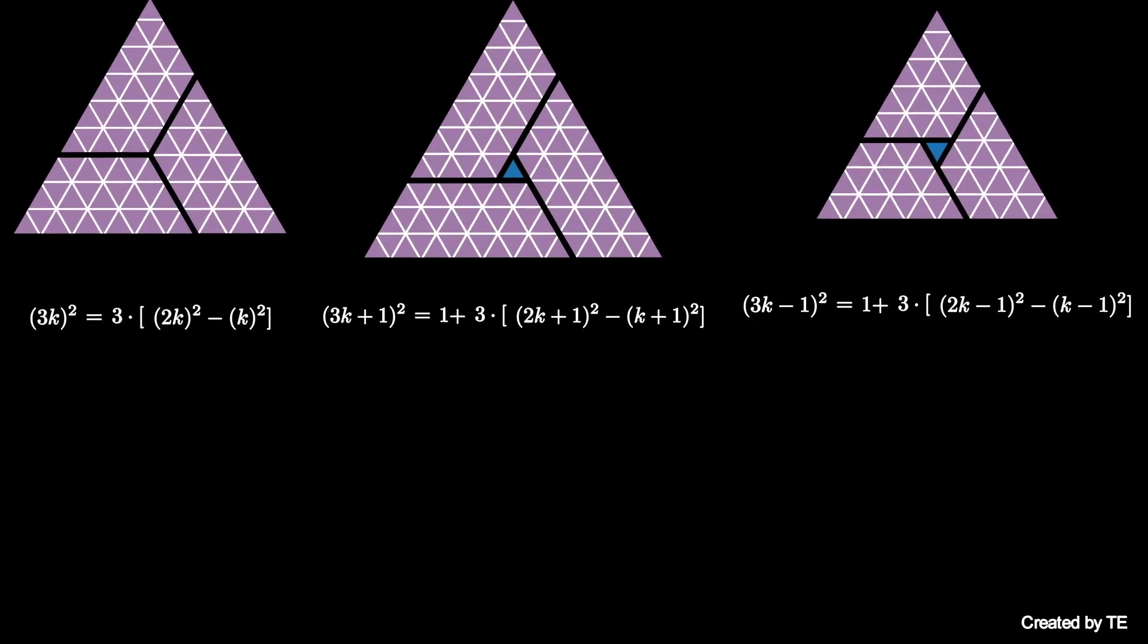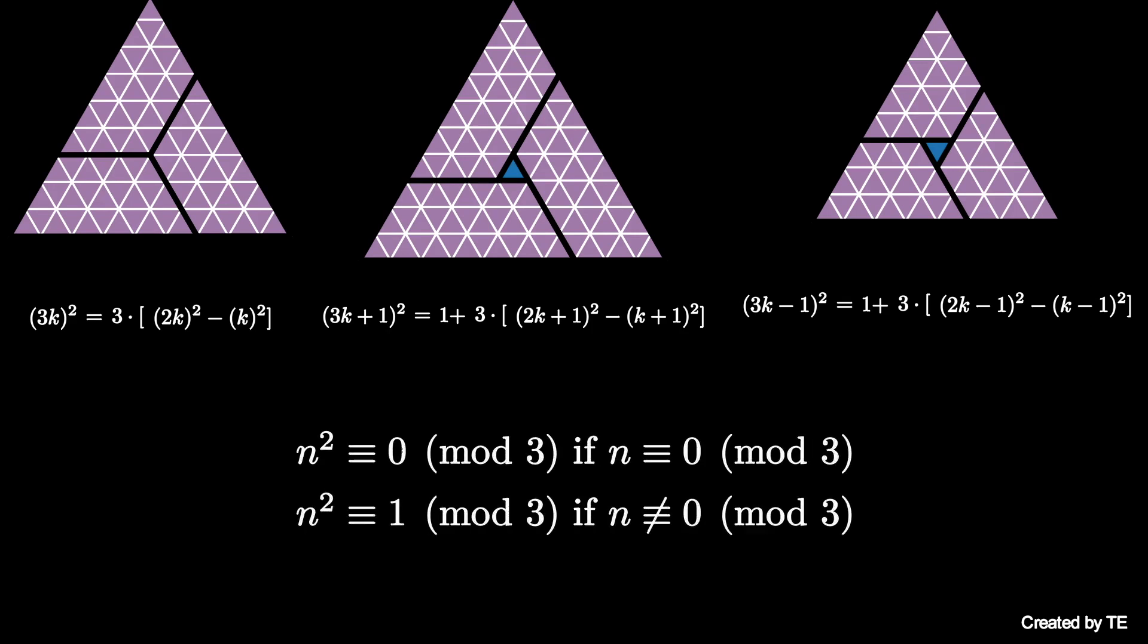Therefore, we've seen that n² is congruent to 0 mod 3 if n is congruent to 0 mod 3, and n² is congruent to 1 mod 3 if n is not congruent to 0 mod 3. Since every number is either a multiple of 3, one more than a multiple of 3, or one less than a multiple of 3, we've seen that every square is congruent to 0 or 1 mod 3.